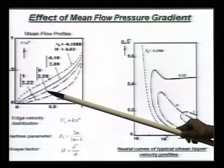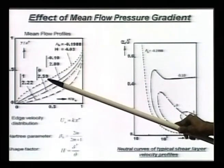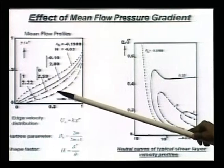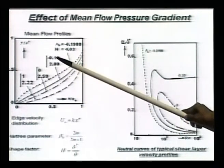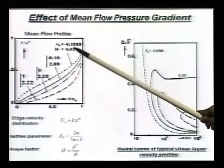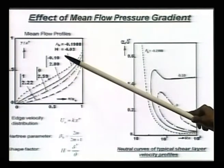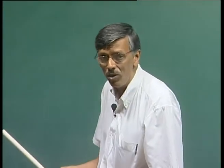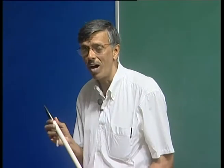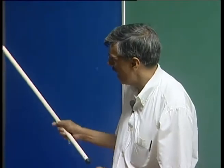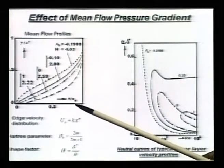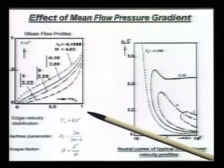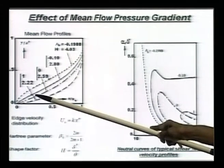The second last figure from the bottom corresponds to the Blasius profile and the corresponding shape factor happens to be about 2.59. Above these two curves, we see two more profiles for which beta_h is negative and H is greater than the Blasius profile value. Beta_h negative means the flow is decelerating. If the flow decelerates, you do get an inflection point. Recall Rayleigh's theorem - if we have an inflection point, those flows are unstable to the inviscid mechanism. Depending on the value of beta_h, you would have a different location where the inflection point occurs, marked by the crosses here.